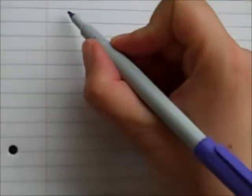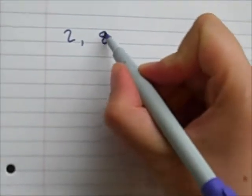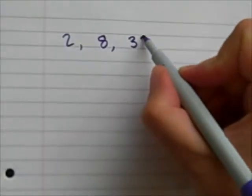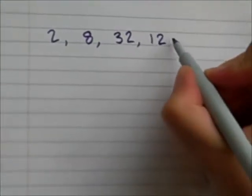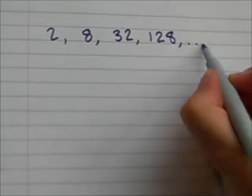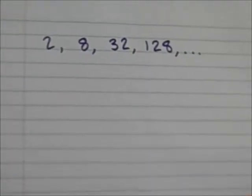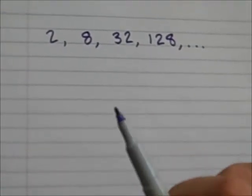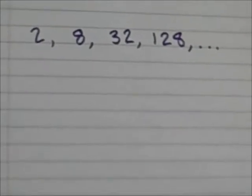I've been given a sequence of numbers, 2, 8, 32, 128 and so on, and I've been asked if I can work out what happens when I add together the first 20 numbers in this sequence.